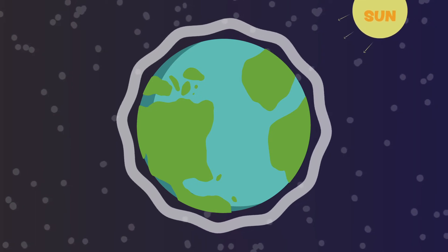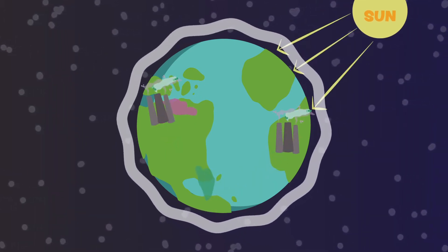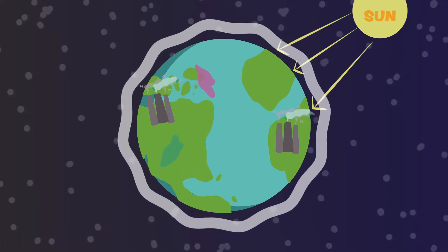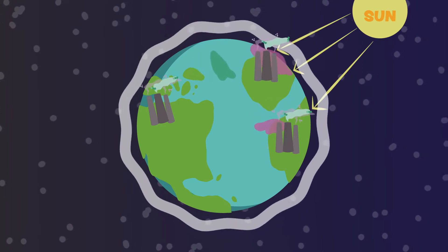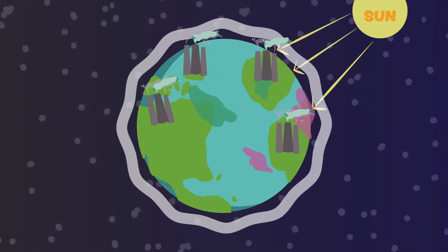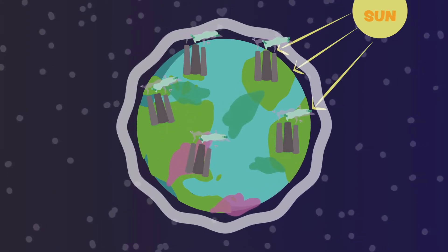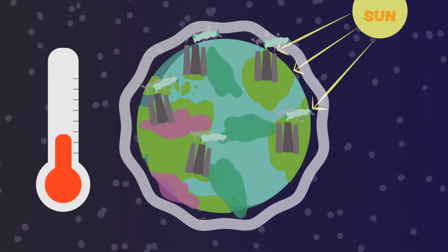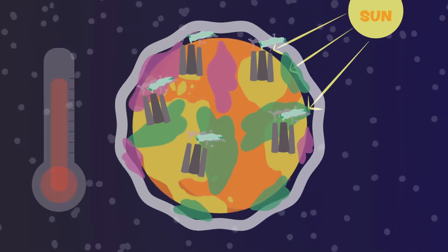Greenhouse gases stay in the Earth's atmosphere and trap heat from escaping the Earth. Some carbon dioxide in the atmosphere is good, but too much carbon dioxide can be dangerous for all life on Earth. Humans have been producing too much carbon dioxide and other greenhouse gases, and now too much heat is being trapped and the Earth is getting too warm.